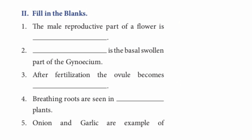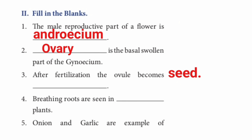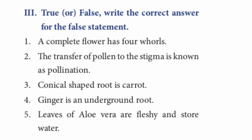Roman numeral II: Fill in the blanks. 1. The male reproductive part of a flower is — androecium. 2. Dash is the basal swollen part of the gynoecium — ovary. 3. After fertilization, the ovule becomes — seed. 4. Breathing roots are seen in — Avicennia plants. 5. Onion and garlic are examples for — bulb.